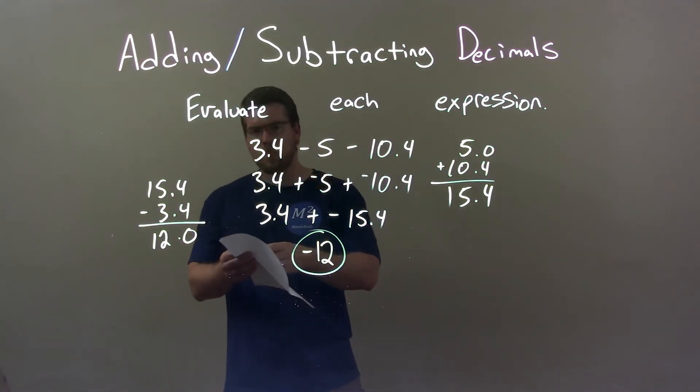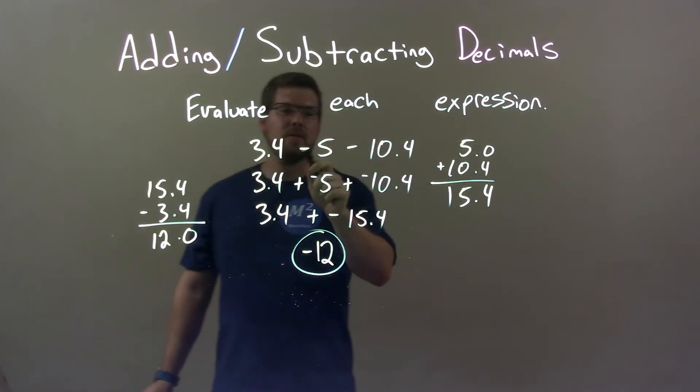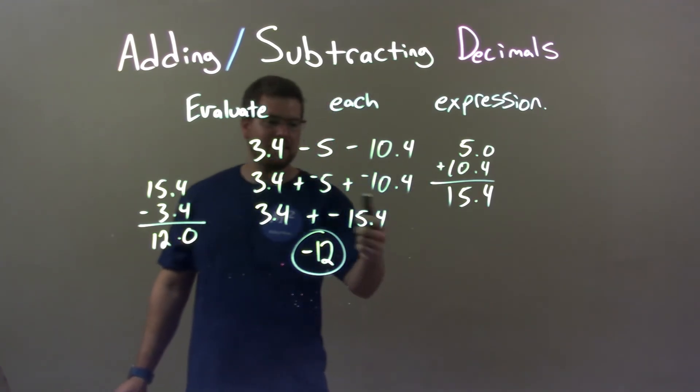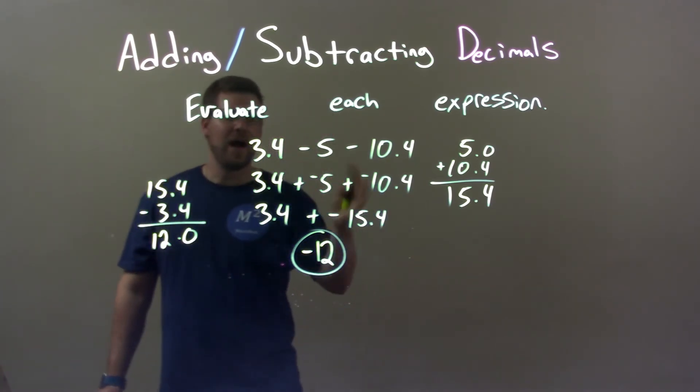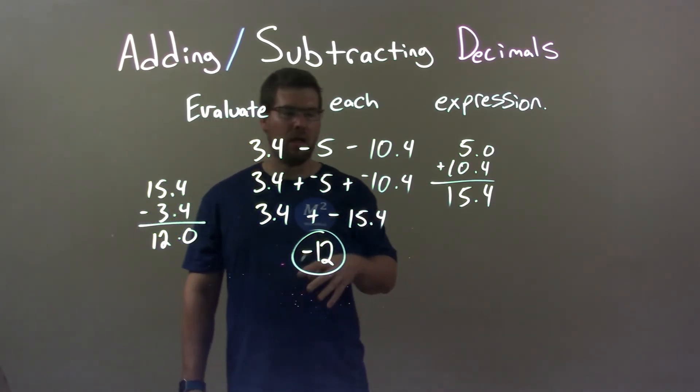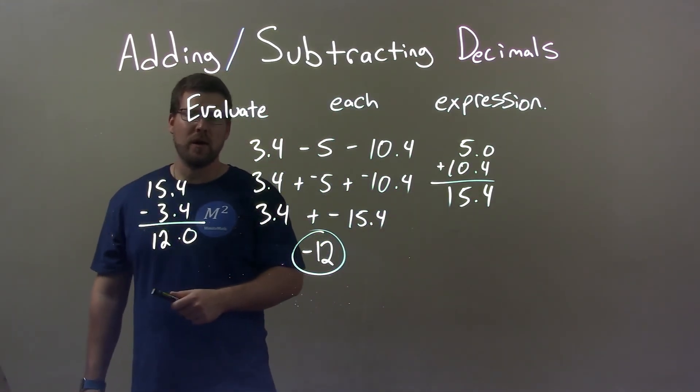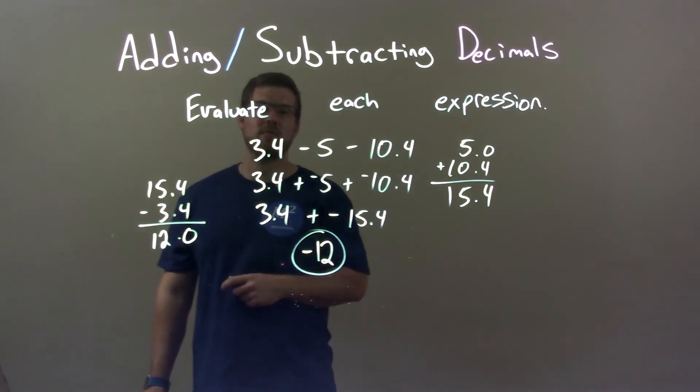So quick recap. We're given 3.4 minus 5 minus 10.4. I made these subtractions into adding a negative. Combined these two together and got negative 15.4. Then, since this is a larger negative than 3.4 is positive, I know my final answer has to be negative. Found the difference between the two. Got 12.0. Knew it had to be negative. So my final answer is just negative 12.